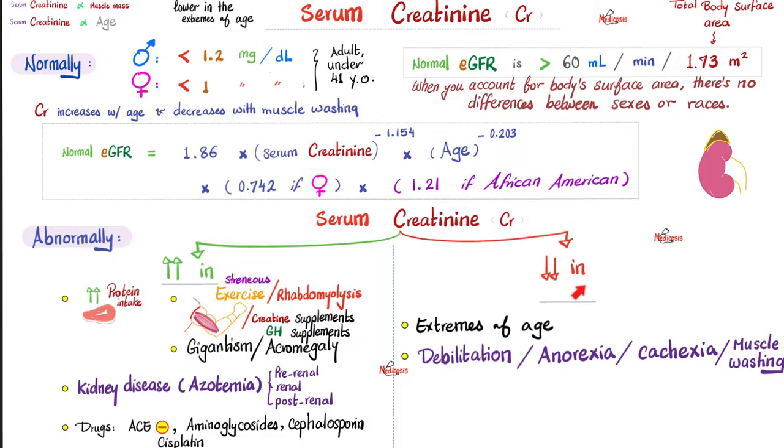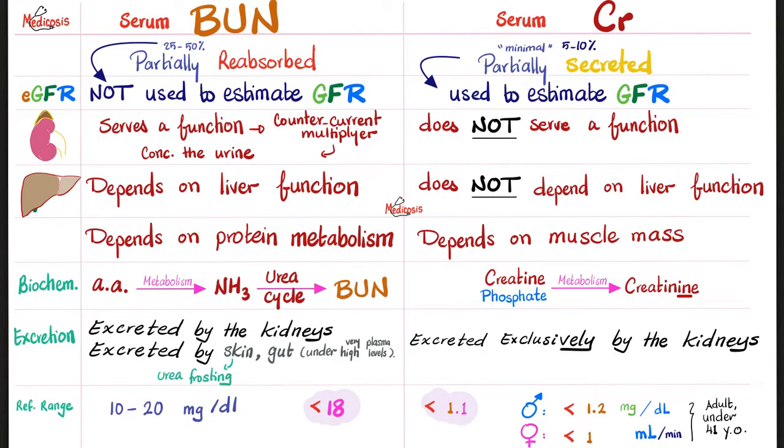Conversely, decreased serum creatinine could be seen in extremes of age. In the very young, because they have less muscle, and in the very old, because they have poorer kidney functions. Or any condition of debilitation, anorexia, cachexia, muscle weakness, severe protein malnutrition. In the next video, we shall talk about urea, or blood urea nitrogen.